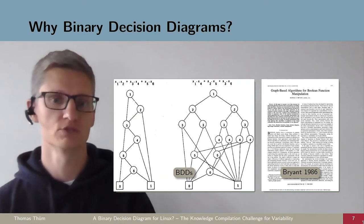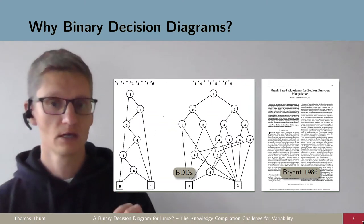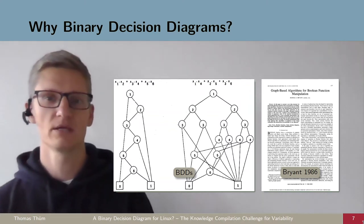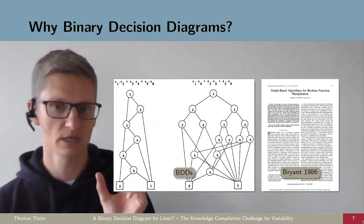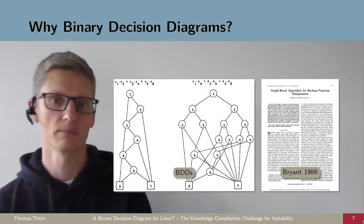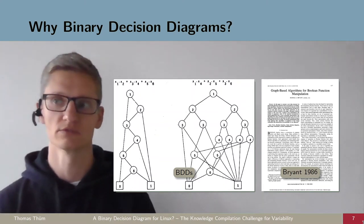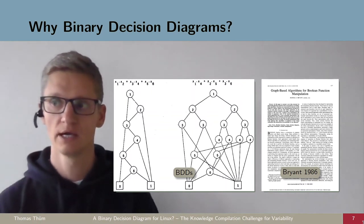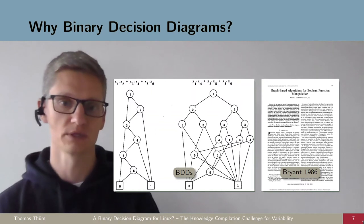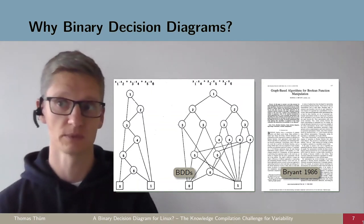The problem and the challenge with BDDs is that they are heavily dependent on the order of variables. The right hand side shows an encoding of the same formula, but with a different variable encoding. We see that kind of explodes. We have a lot more variables in the BDD. That's the challenge that is faced by the community when people want to apply it to large configuration spaces.